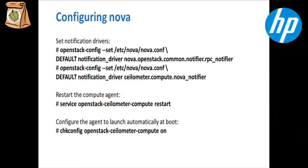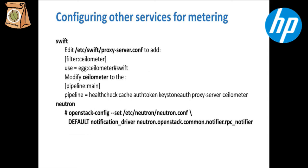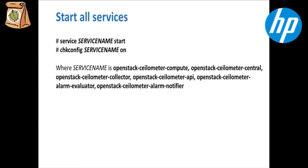Setting the drivers through which these notifications pass up from Nova to Selometer. And then restarting the compute agent to have these settings take effect and enabling them to run the next time that the agent is installed. On the other services, there are similar settings of either configuring how notifications get sent to Selometer. For the most part, what these settings consist of is just providing the mechanism that Glance, Cinder, Swift, et cetera, are sending data back up to Selometer. And with those settings in place, you restart each of the Selometer services. They pick up the new settings, and at this point you should be up and running.